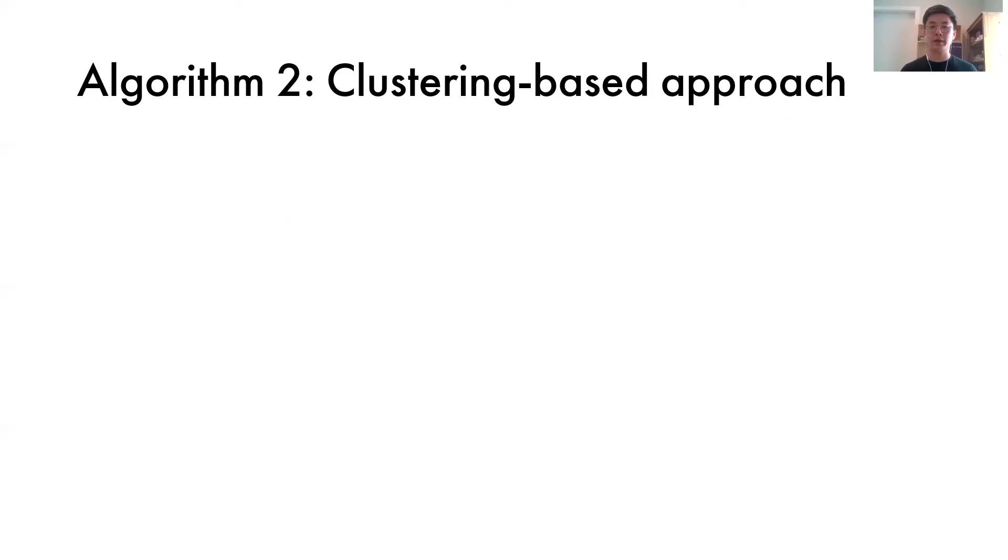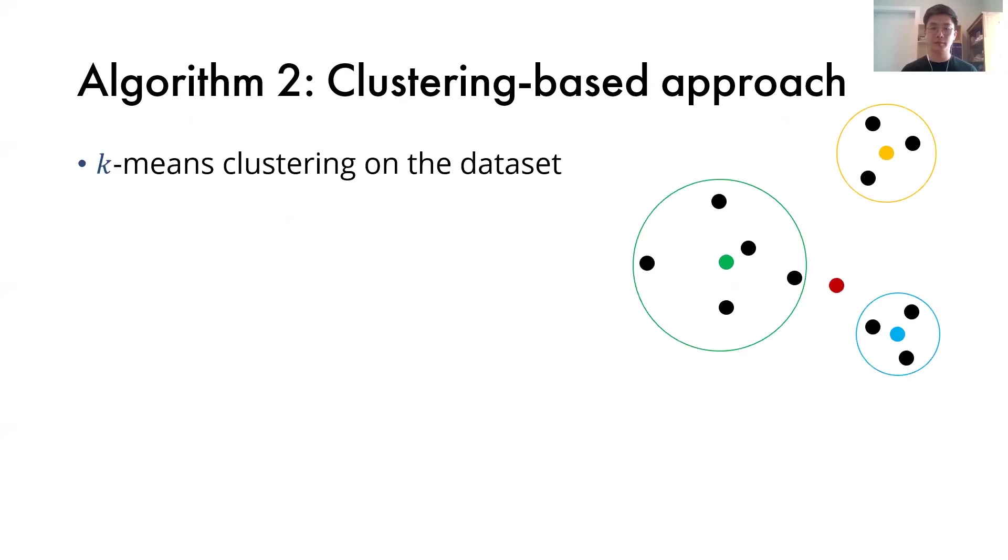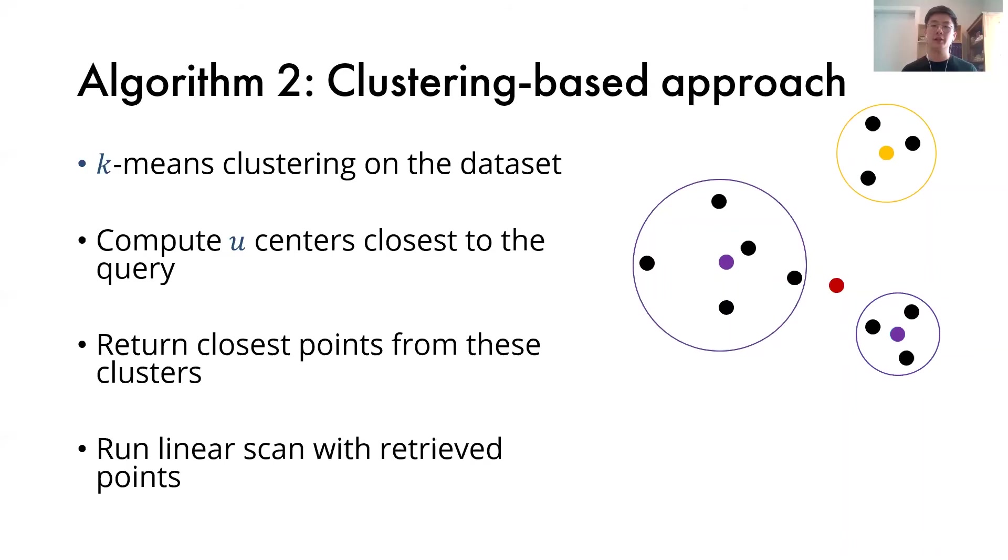Now the randomized top-k selection already makes the linear scan algorithm more efficient than before. The next algorithm we'll introduce is the clustering-based approach, which further improves efficiency. For this algorithm, we first perform k-means clustering on the server's dataset. Then at query time, we will privately compute the used centers that are closest to the query. Then we return the closest point from these clusters. Finally, we run a linear scan with the retrieved points.